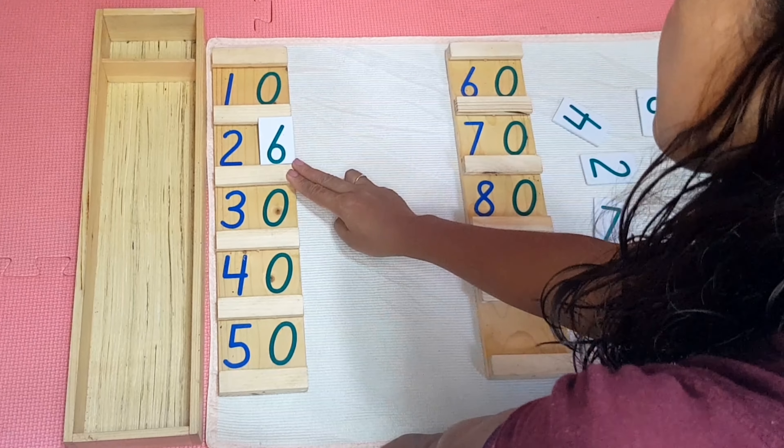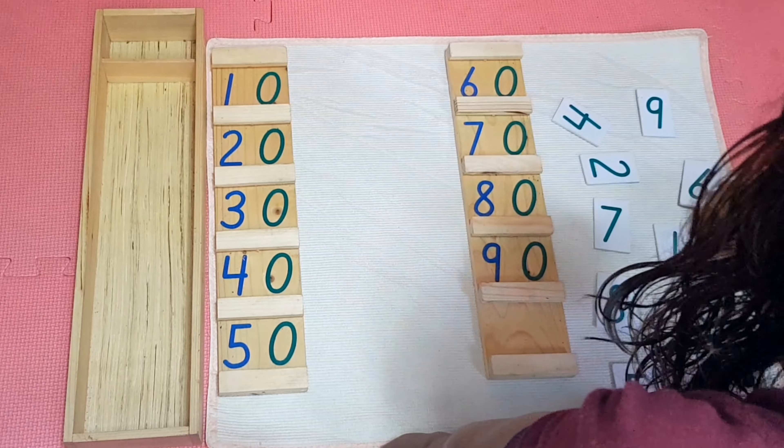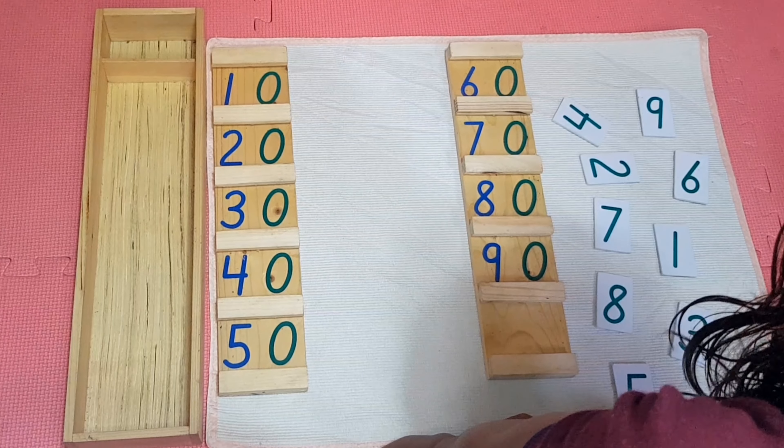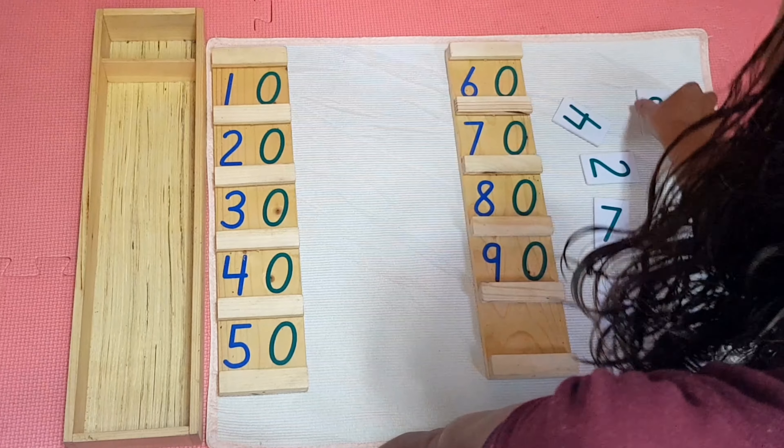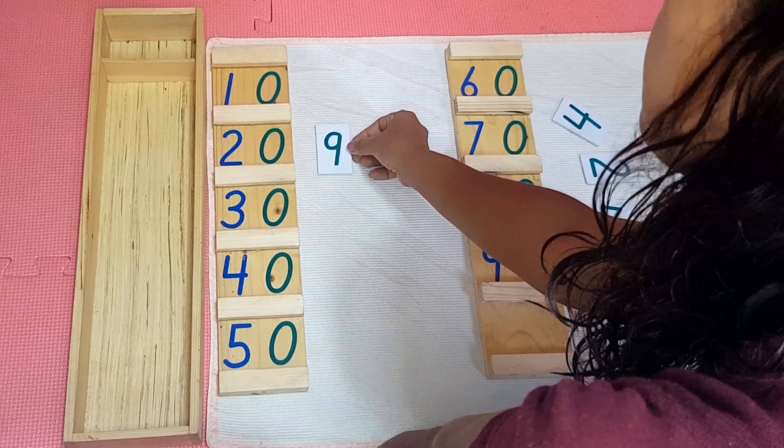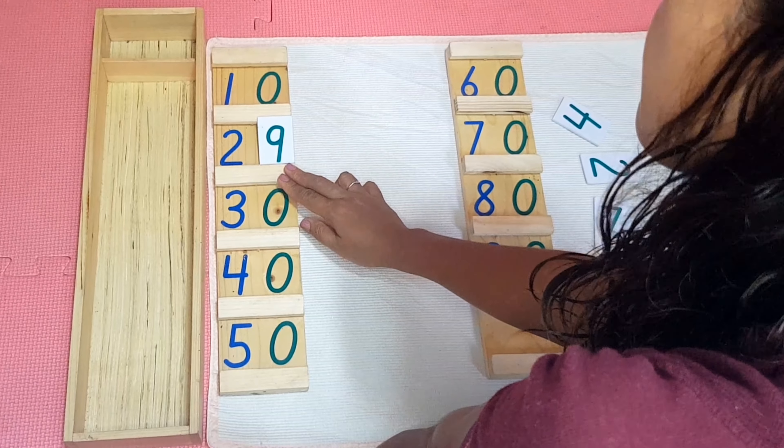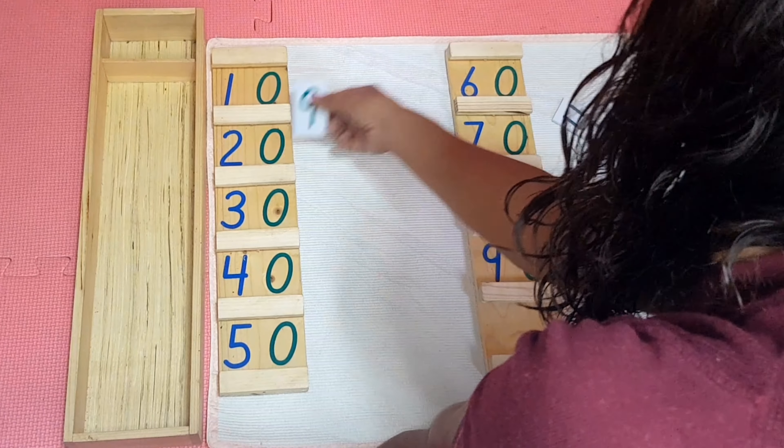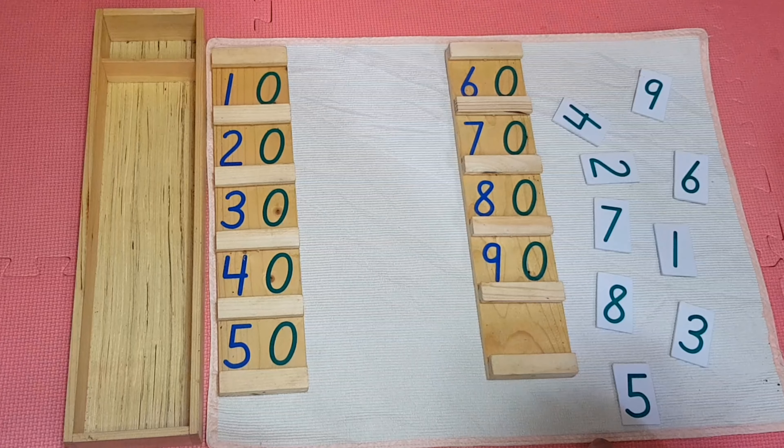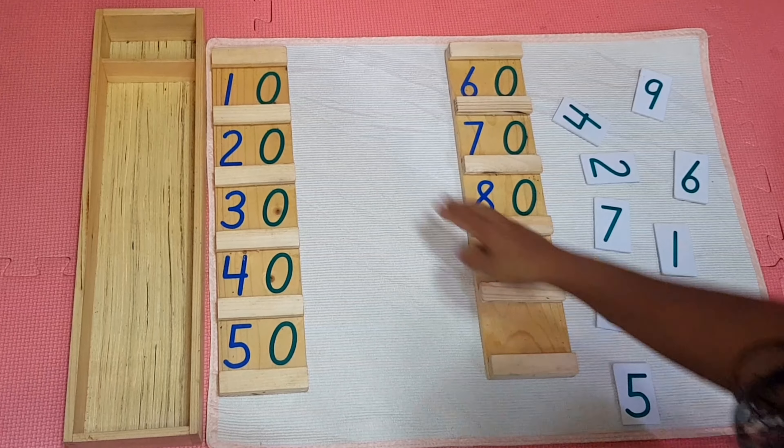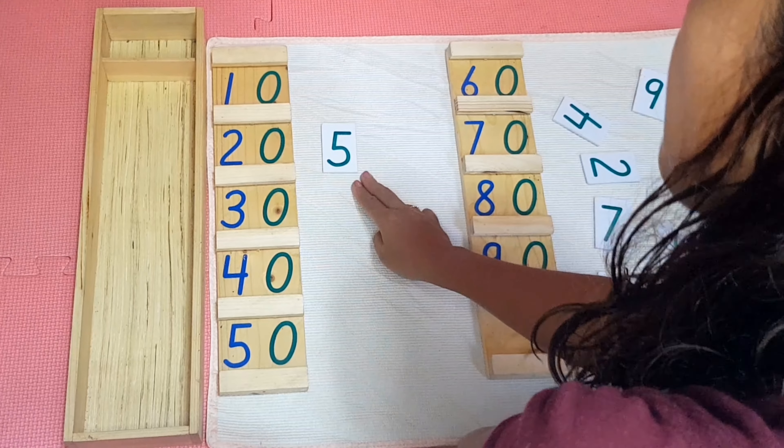Twenty-six, thank you. Can you show me twenty-nine? Twenty-five. Twenty-five. Twenty-five and five. Twenty-five.